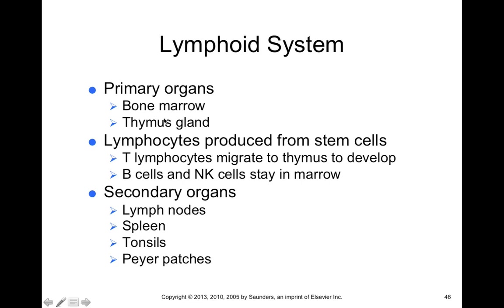T cells develop in the thymus, which is a large gland most active before puberty, sitting in the mediastinum just superior to the heart. Lymphocytes are produced from stem cells, including T and B lymphocytes. T lymphocytes migrate to the thymus to develop, whereas B cells and natural killer cells stay in red bone marrow during development, where they become immunocompetent — able to effectively fight infection and recognize foreign antigens.